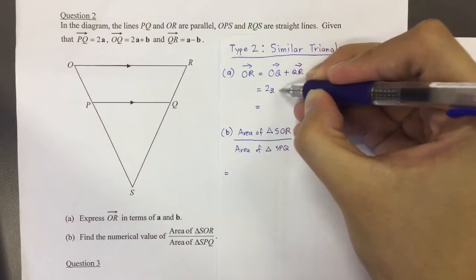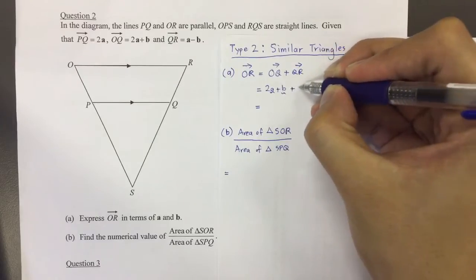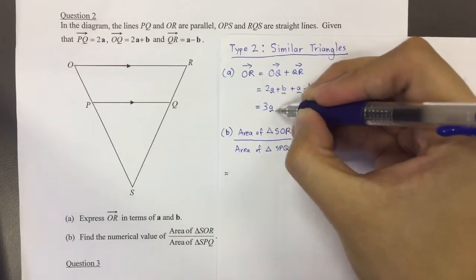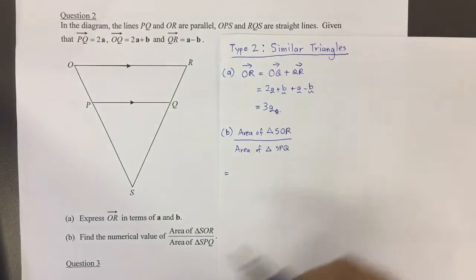So we just write it down in terms of the vectors involved, and we're actually adding them up. Okay, we simplify it, and we realize that we get this. Just a nice little 3A as the vector.